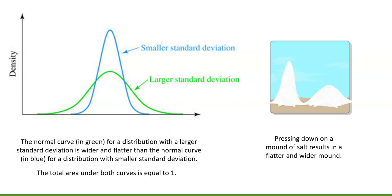To better understand this, think about the normal curve as an amount of salt. If you have the same amount of salt, no matter what shape you make — a taller tower or smashed down wider — the amount of salt doesn't change. That's the idea about the area under the normal curve: it always equals 1, no matter how wide or tall the curve is.